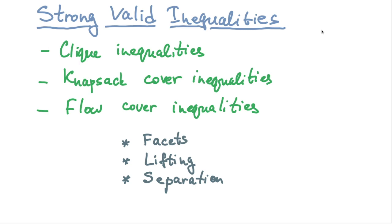Welcome to the lecture on strong valid inequalities. Previously we looked at general purpose methods for generating cuts or valid inequalities, in particular the Gomory cuts and the Chvátal-Gomory cuts. In this lecture we'll focus on techniques that are not as general but are sufficiently general to be interesting, focusing on one type of inequality at a time that constitutes special structures within integer programs.